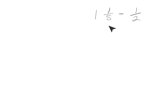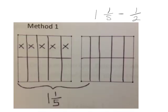We're going to look at three ways to solve 1 and 1 fifth take away 1 half. The first method is with a rectangular fraction model. We have our two rectangles, initially divided into fifths vertically, and 1 and 1 more fifth are selected. Since we're subtracting 1 half,